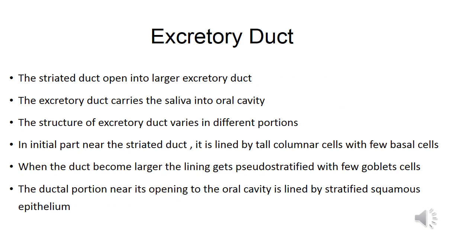The excretory duct: the striated duct opens into a large excretory duct, which carries the saliva into the oral cavity. The structure of the excretory duct varies in different portions. In the initial part, near the striated duct, the excretory duct is lined by tall columnar cells with few basal cells.